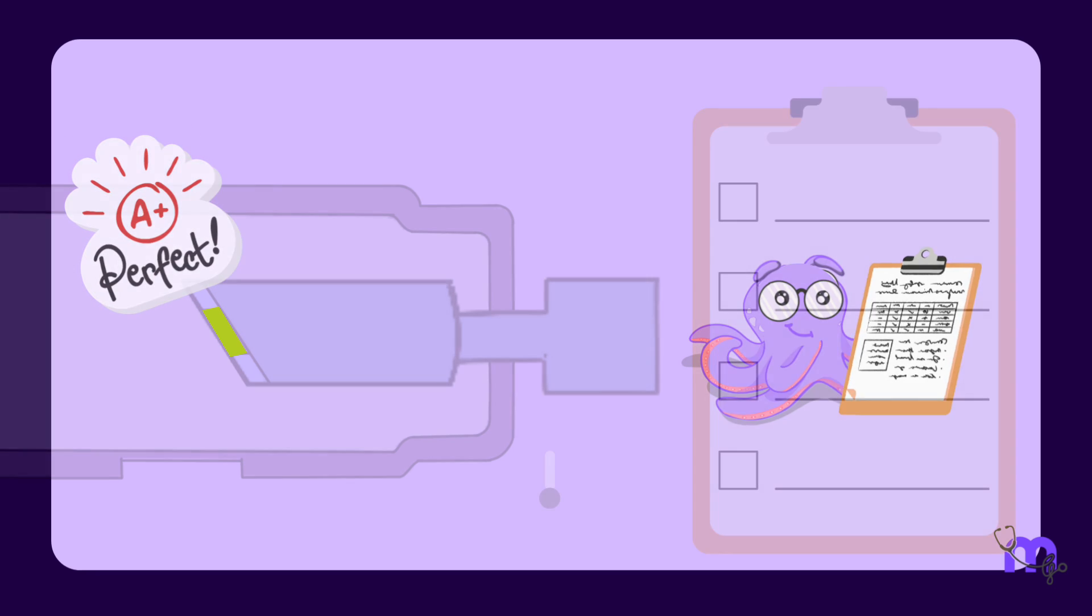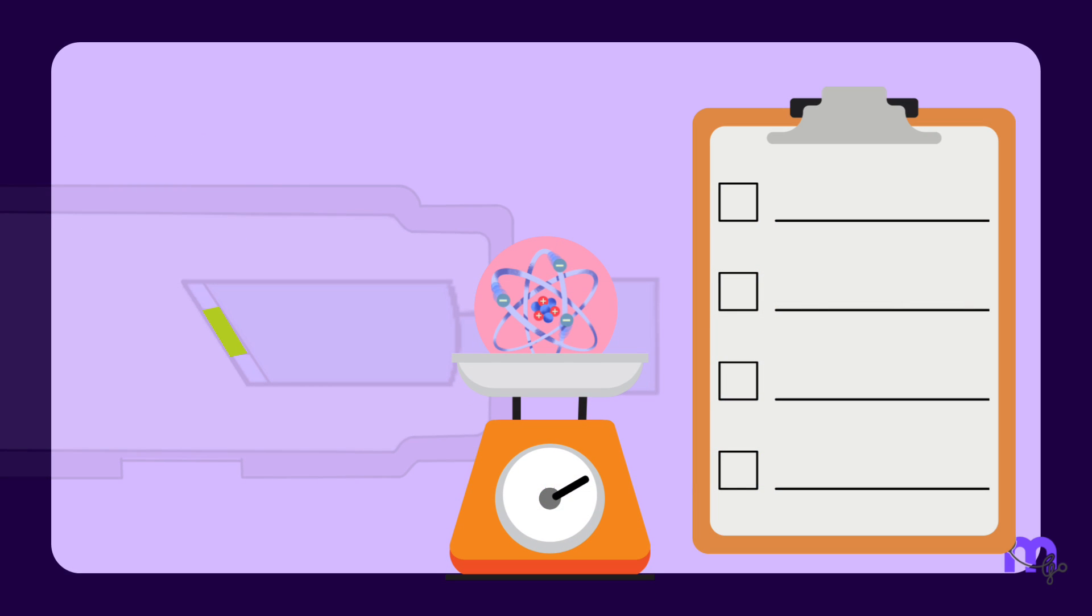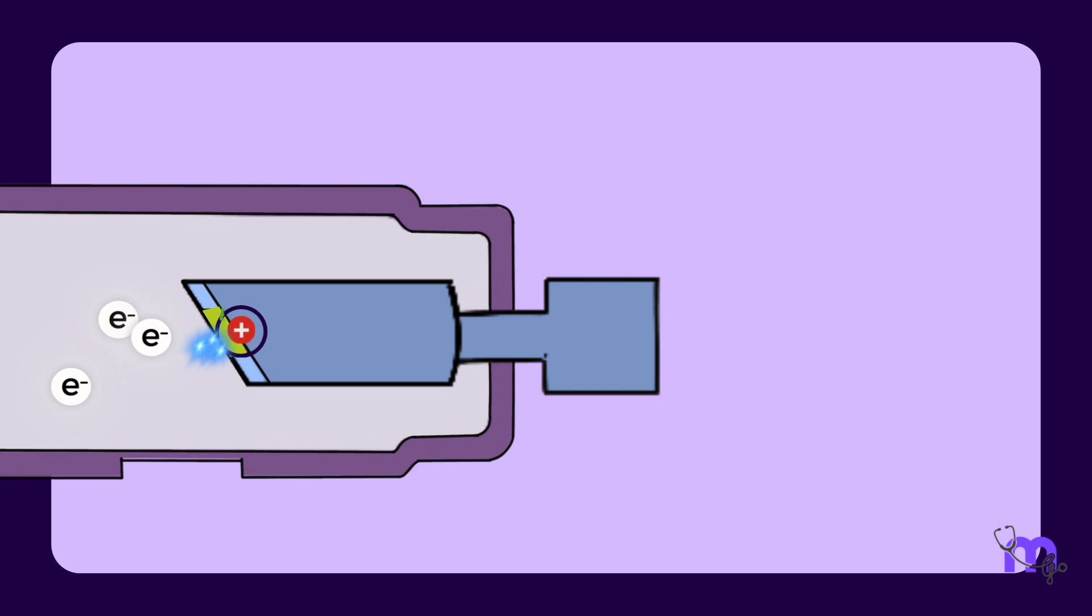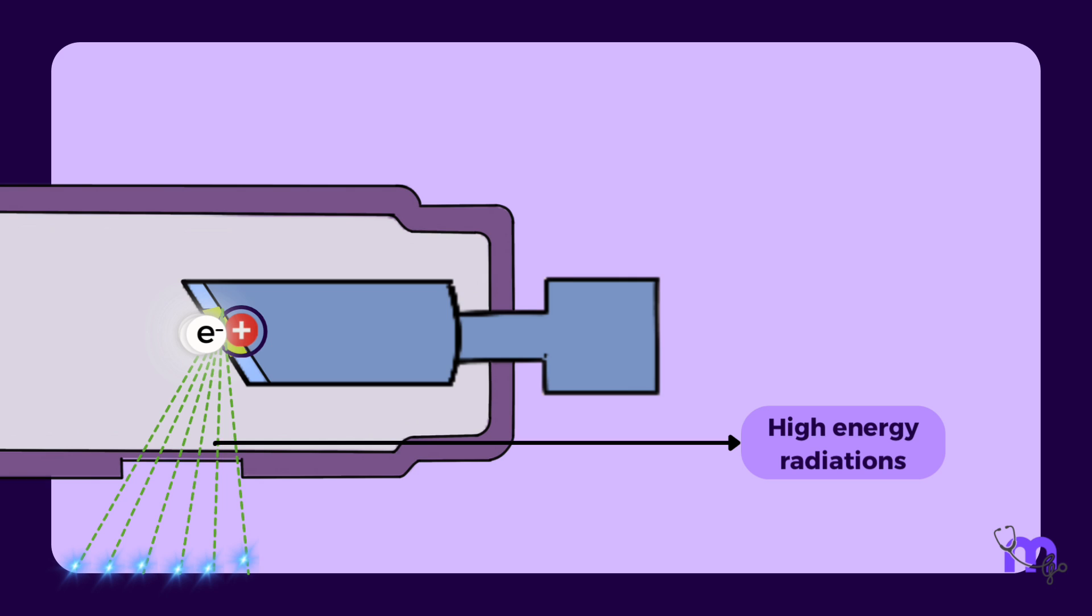It is important to understand that the target has to be made of a material that meets certain criteria to be called ideal. First, the chosen element must have a high atomic number. An elevated atomic number indicates a high concentration of protons within the nucleus, which implies that the nucleus is highly charged. This causes greater deceleration and deflection of the incoming electrons, producing higher energy radiation.